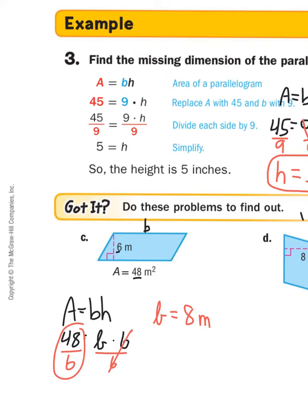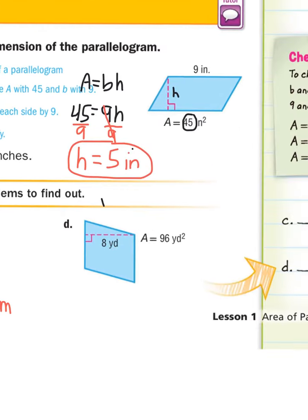All right, so now here is your challenge. Your challenge is to do D by itself. You must write the formula. You must substitute 8 in and 96 in in the correct spot. And then you must solve. Now, if you're confused, if you're like, I don't know if that 8 is the base or the height, it doesn't really matter because you can switch the order of the base and height and get the same thing. So don't forget your unit. Let's see if you can get this one completely on your own. Pause. Restart when you're done. Go.